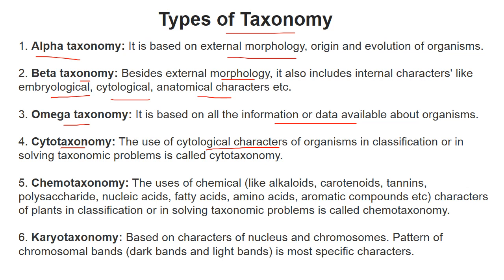Cytotaxonomy helps solve taxonomical problems by classifying organisms based on cytological characteristics. Chemotaxonomy is based on the chemical compounds of the organism, such as nucleic acids, fatty acids, amino acids, and aromatic compounds — we classify organisms using these chemical compounds. Karyotaxonomy is based on the characteristics of the nucleus and chromosomes. These are the different types of taxonomy.